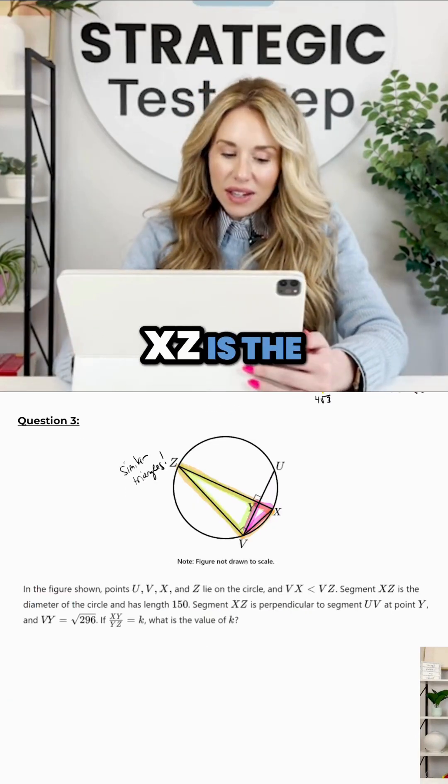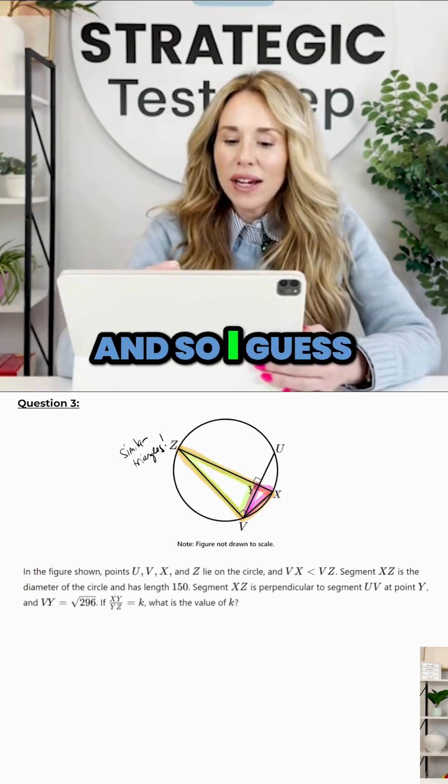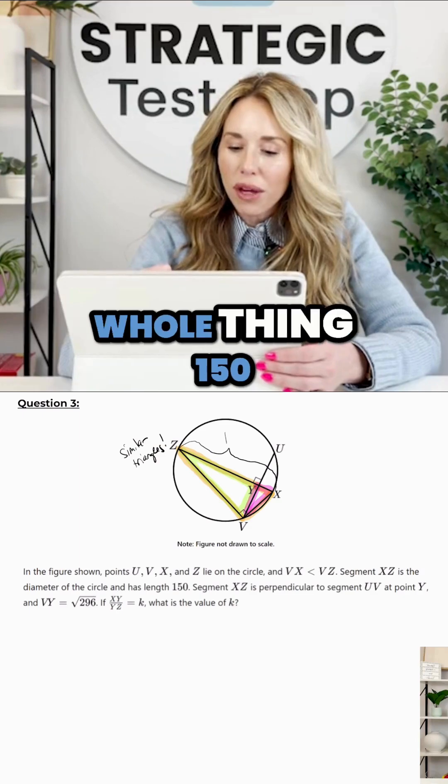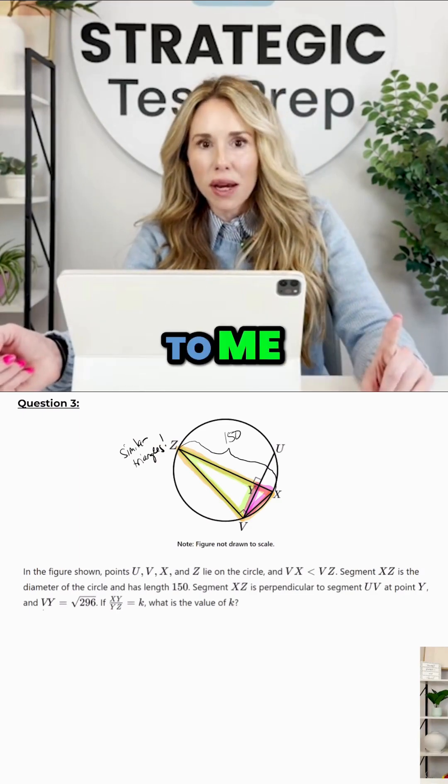So they said segment XZ is the diameter of a circle and has length 150. Okay. And so right now, if this was the first time I did it, I might go like this and label the whole thing 150. And I'm thinking, okay, if we're going to use the big right triangle, that might be valuable to me. But let's see.